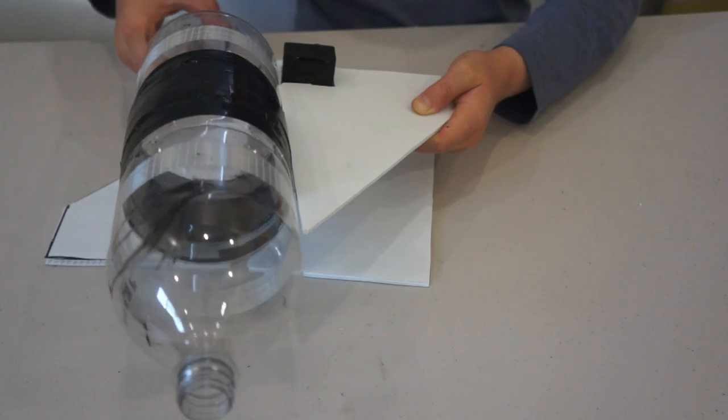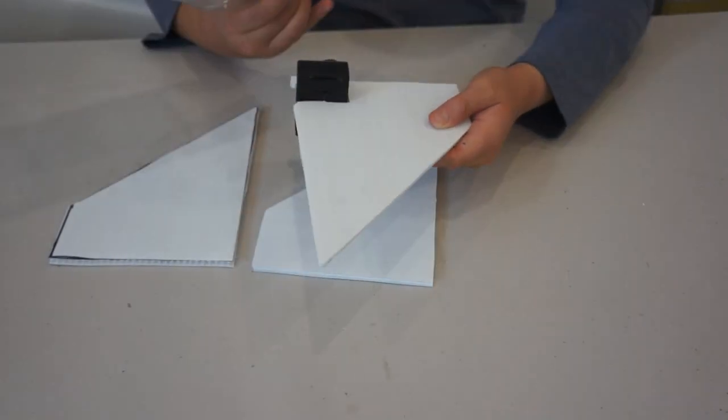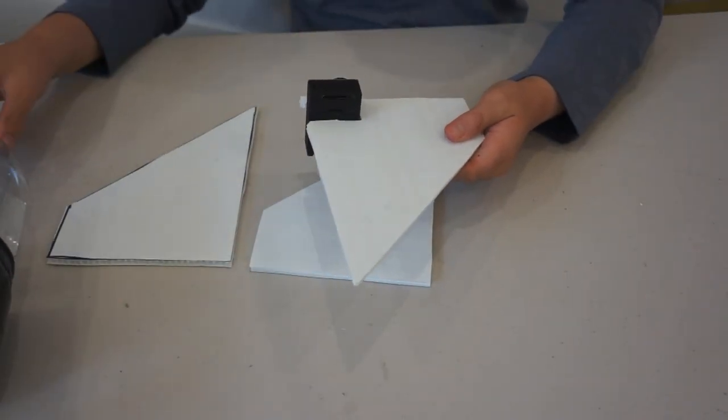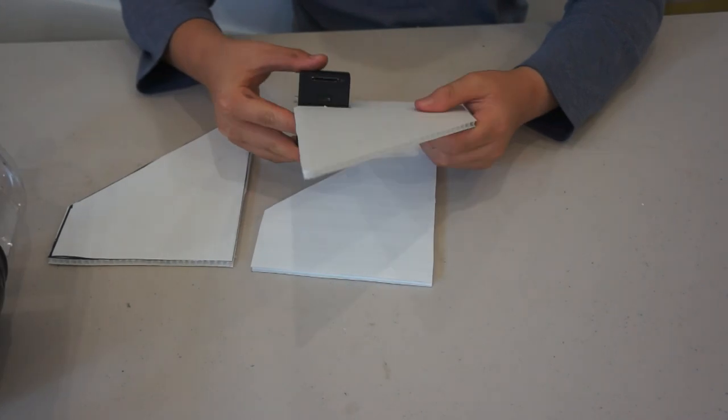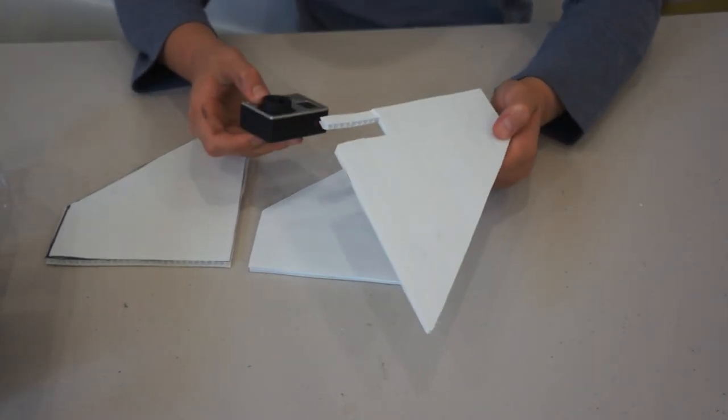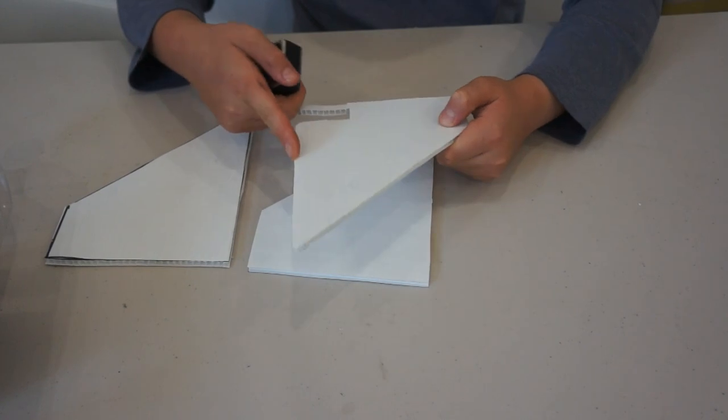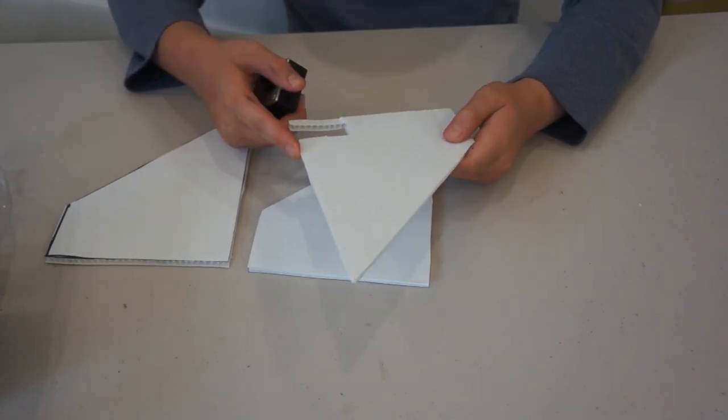And so the GoPro is facing down so you can see the ground when the rocket goes up. And hopefully we can get some cool shots with it. Now let's glue the fins to the main body.